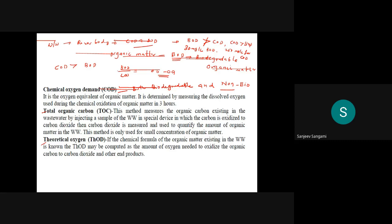COD is an equivalent measure of organic matter — it is determined by measuring the dissolved oxygen used during chemical oxidation of organic matter, completed within three hours. This is very important: in BOD the process is biochemical oxidation, whereas COD involves only chemical oxidation. BOD requires a minimum of three days and can go up to 20 days, but COD can be completed within just three hours — this is a major advantage.